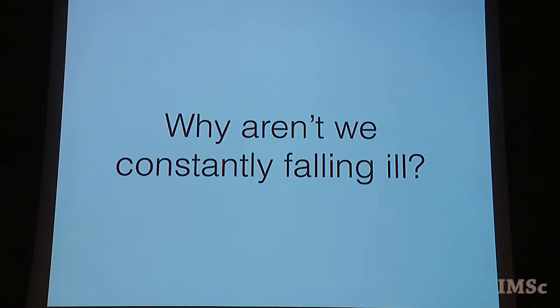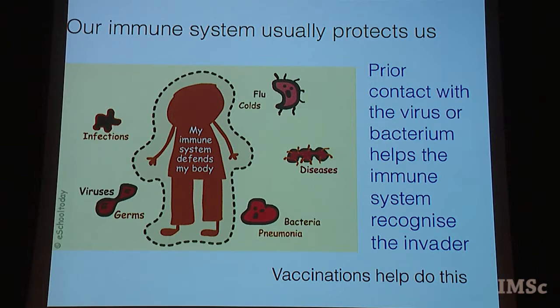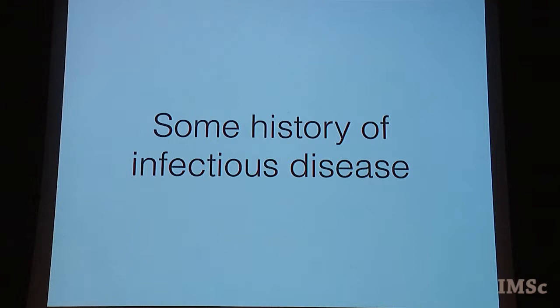We've heard various terrible things about cholera, HIV/AIDS, MERS, etc. Now the question is: why don't we constantly fall ill? All it takes is for someone to leave a little bacteria on a door handle or sneeze in your vicinity. The answer is that our immune system usually protects us. There are many layers of immunity — our skin, the passages of our mouth, the lining of our lungs all contain elements that protect us. Prior contact with a virus or bacterium helps the immune system gear up faster. Vaccinations prime the immune system to quickly recognize and deal with a disease encountered later.